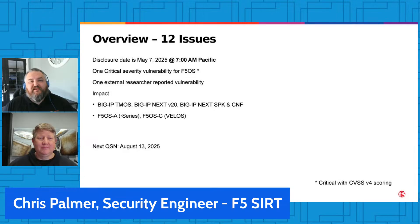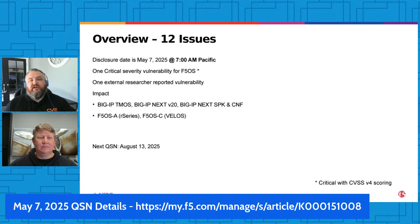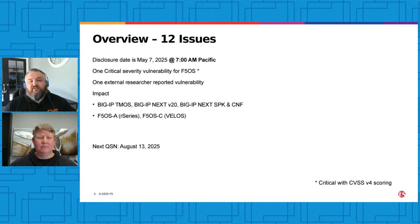We disclosed these at 7 a.m. Pacific time this morning. We have one critical severity vulnerability for F5OS — though it is only critical in CVSS version 4; it's a high when scored with CVSS version 3.1. We have one external researcher-reported vulnerability. The products impacted are BigIP TMOS, BigIP Next version 20, BigIP Next SPK and CNF, F5OS-A for our series, and F5OS-C for VELOS. Our next QSN will be on August 13, 2025.